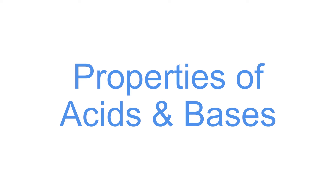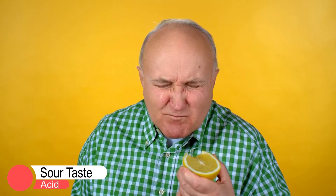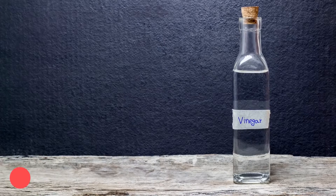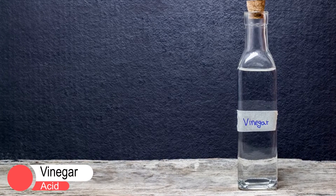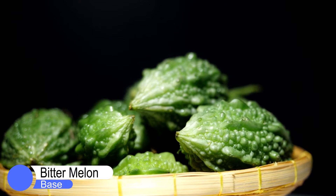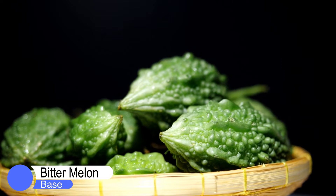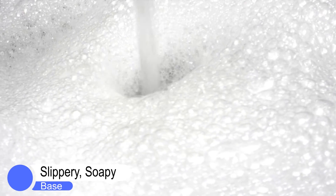Acids and bases have very distinct properties that enable us to distinguish one from another. Acids have a sour taste, while bases taste bitter. Vinegar tastes sour because it contains around 5% acetic acid, and ampalaya or bitter melon extract is bitter because it is basic. Bases are also slippery and soapy.